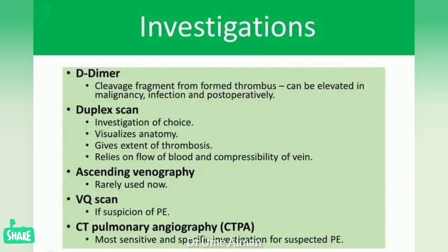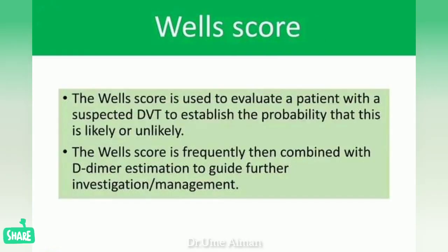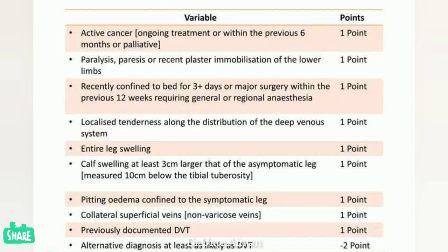The Wells Score is used to evaluate a patient with suspected DVT to establish the probability — likely or unlikely. It is a measuring tool that identifies whether DVT is likely or unlikely. The Wells Score is frequently combined with D-dimer estimation to guide further investigations or management.